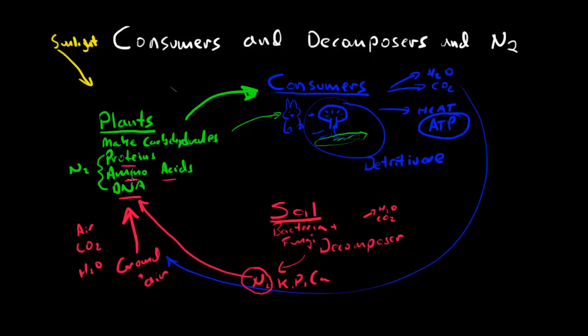Understanding the role of consumers and decomposers in the nitrogen cycle is very important because bacteria are a key player. The bacteria fix the nitrogen and convert it into forms that the plant can absorb.